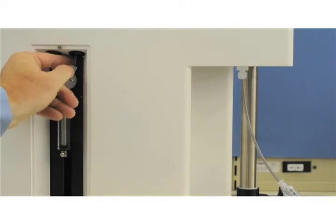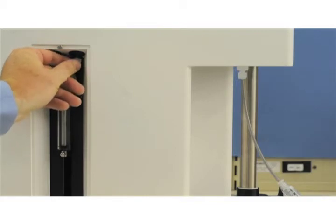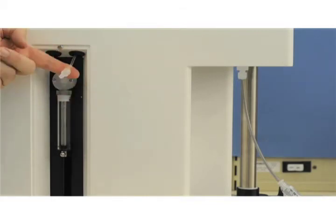Disconnect the tube fitting connected to the 2 o'clock position of the syringe valve. Be careful when removing the fitting from the valve so as not to damage the flange at the end of the tube.